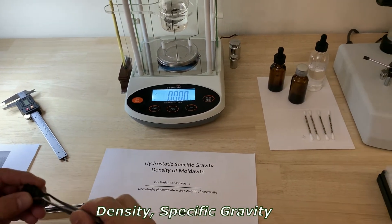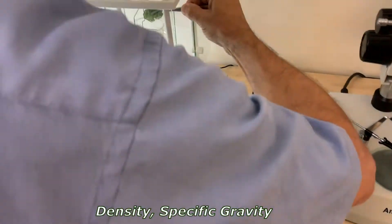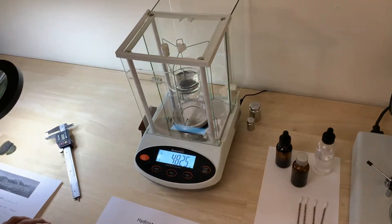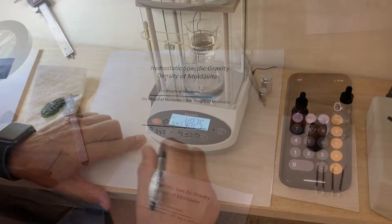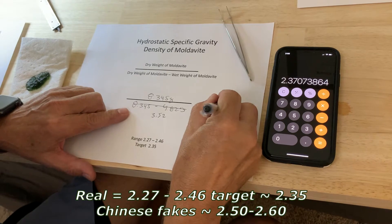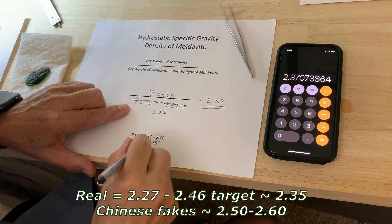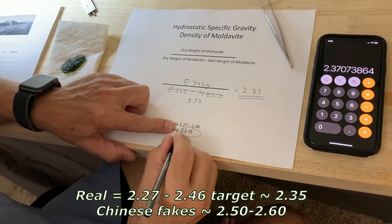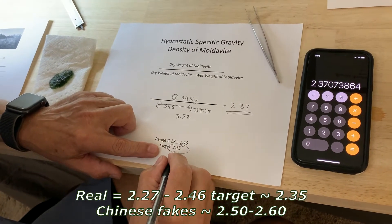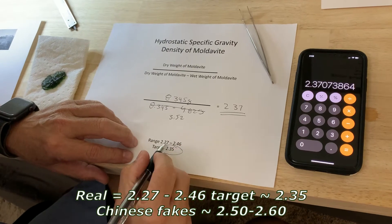Next we weigh the sample in distilled water. There's some air bubbles on there that makes it a little less accurate. We're going to come up with 2.37—look at that, it's right next to our target. The range is 2.27 to 2.46, and the target's about 2.35, but it can be anywhere in this range.